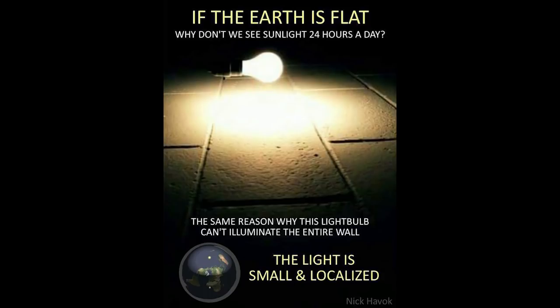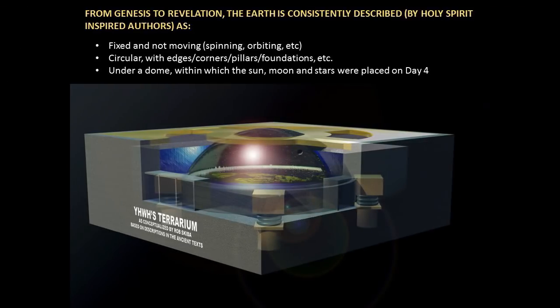If we're on a circular, still flat earth set on pillars under a dome, within which the sun, moon, and stars are placed on day four according to the Bible, then the sun and moon are what's moving and the stars are what are moving — not the earth. Therefore they are a lot closer and a lot smaller, as mentioned in previous segments.